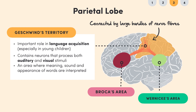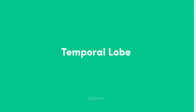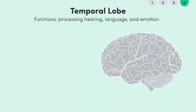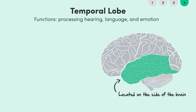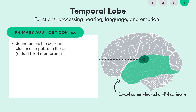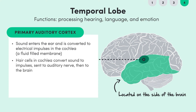Finally, we have the temporal lobe, located on the side of the brain. It has quite a few different functions, including processing hearing, language and emotion. The part of the temporal lobe that processes hearing is the primary auditory cortex. Sound enters the ear and is converted to electrical impulses in the cochlea, a fluid-filled membrane. The cochlea has hair cells which convert sound to impulses so they can be sent to the auditory nerve and then to the brain. The primary auditory cortex helps us listen to music or understand conversations.